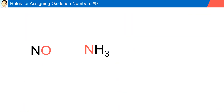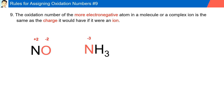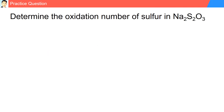Rule number nine: the oxidation number of the more electronegative atom in a molecule or complex ion is the same as the charge it would have as an ion. For example, in NO, oxygen is more electronegative and has a minus two charge, resulting in nitrogen having a plus two charge. In NH₃, nitrogen is more electronegative than hydrogen, so it has a minus three charge and each hydrogen has a plus one oxidation number.